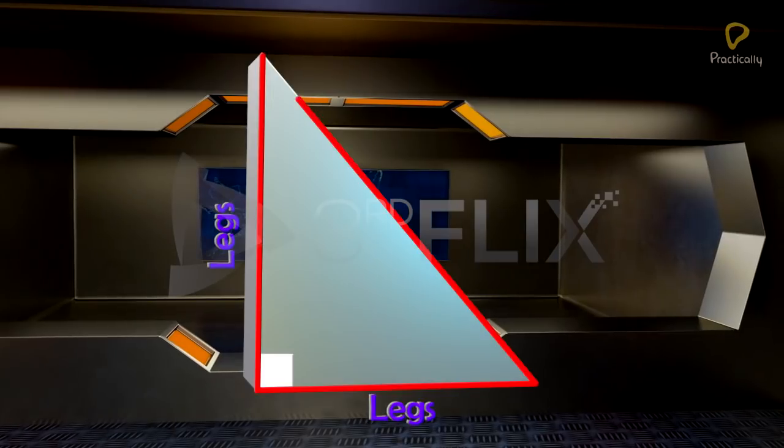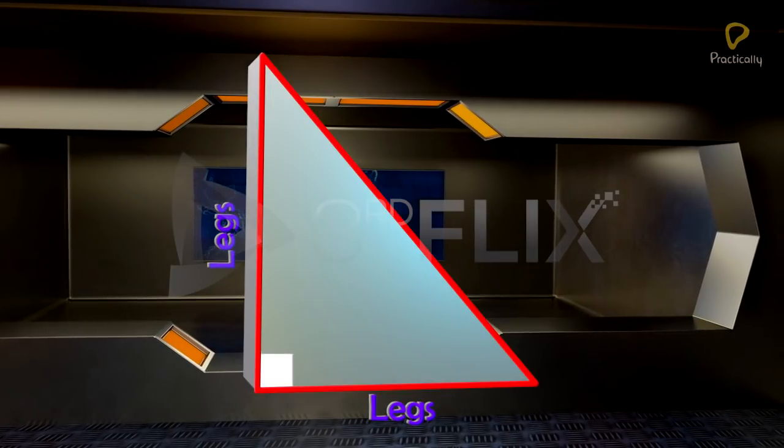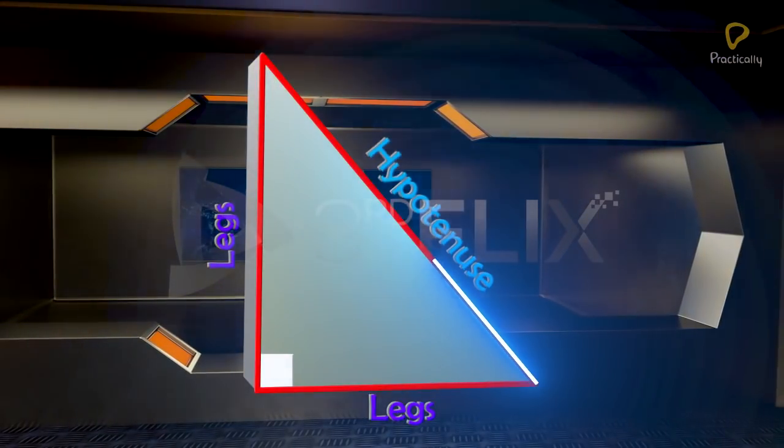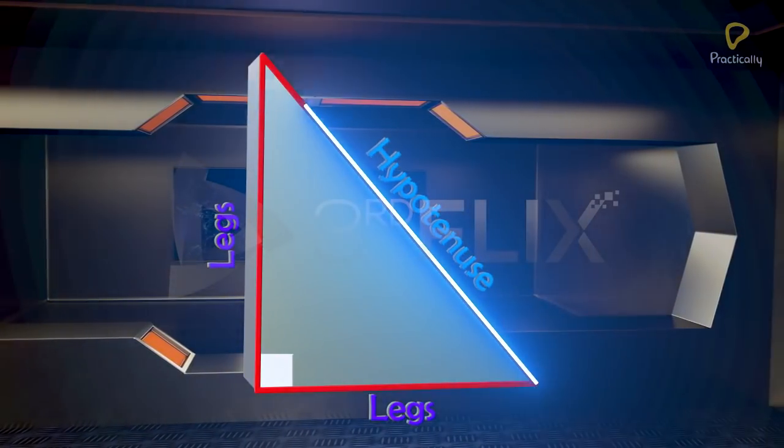The side that is opposite to the right angle is called the hypotenuse. The hypotenuse is always the longest side of the right triangle.